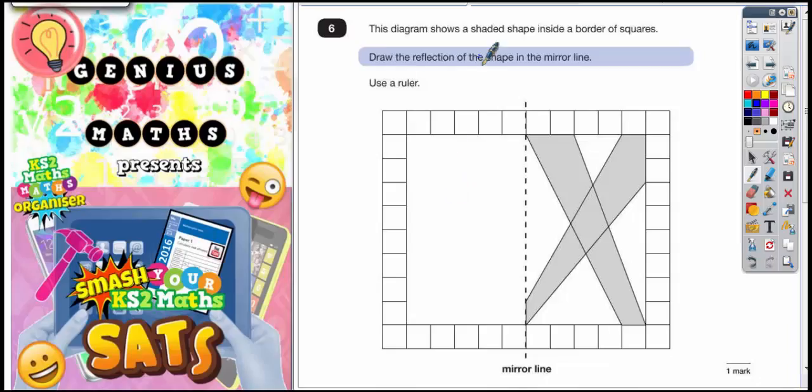Question 6. This diagram shows a shaded shape inside a border of squares. Draw the reflection of the shape in the mirror line. Use a ruler. Now we're not actually allowed to use mirrors anymore so we're going to have to find some other way.